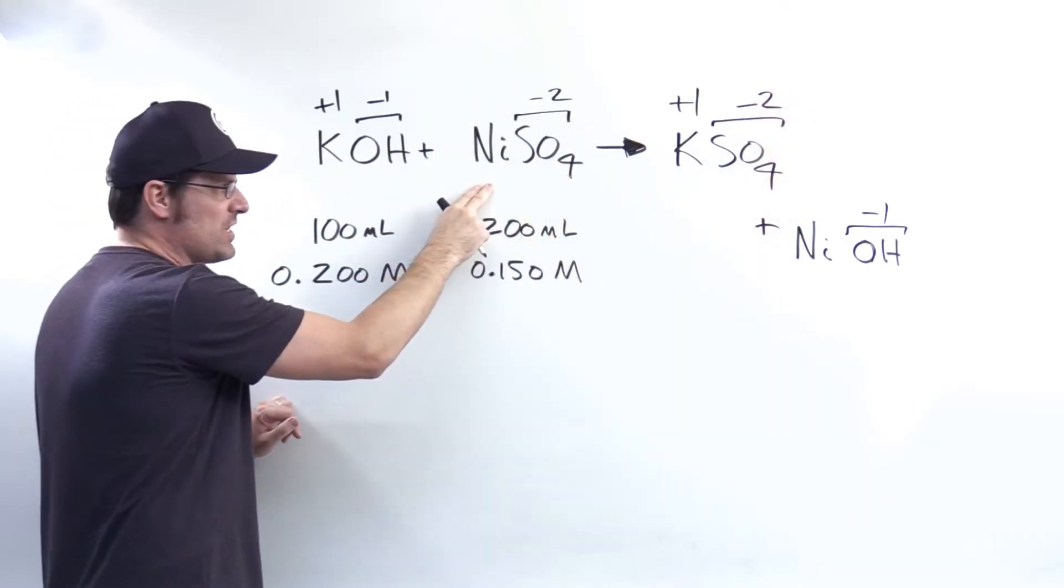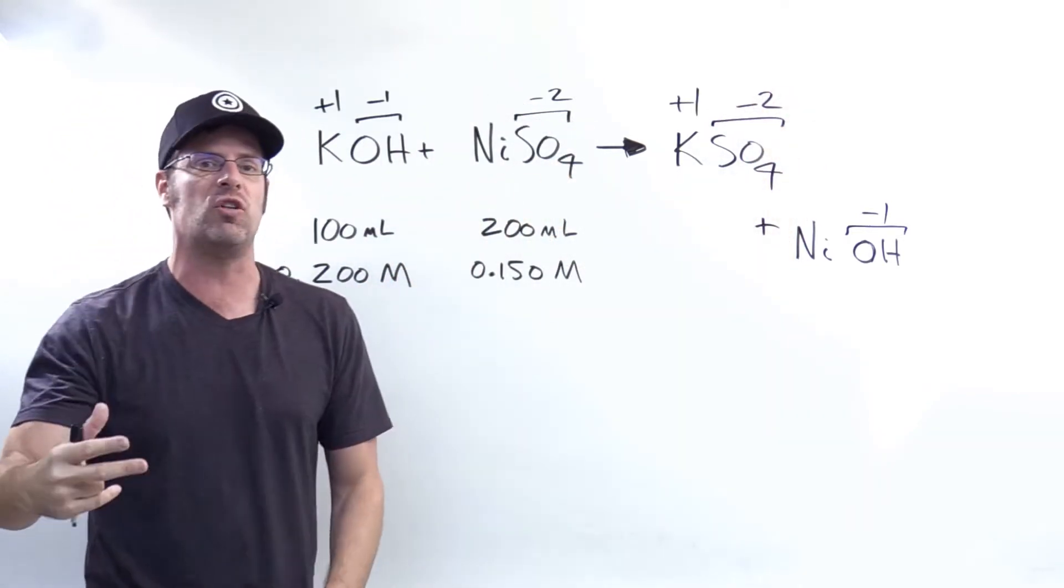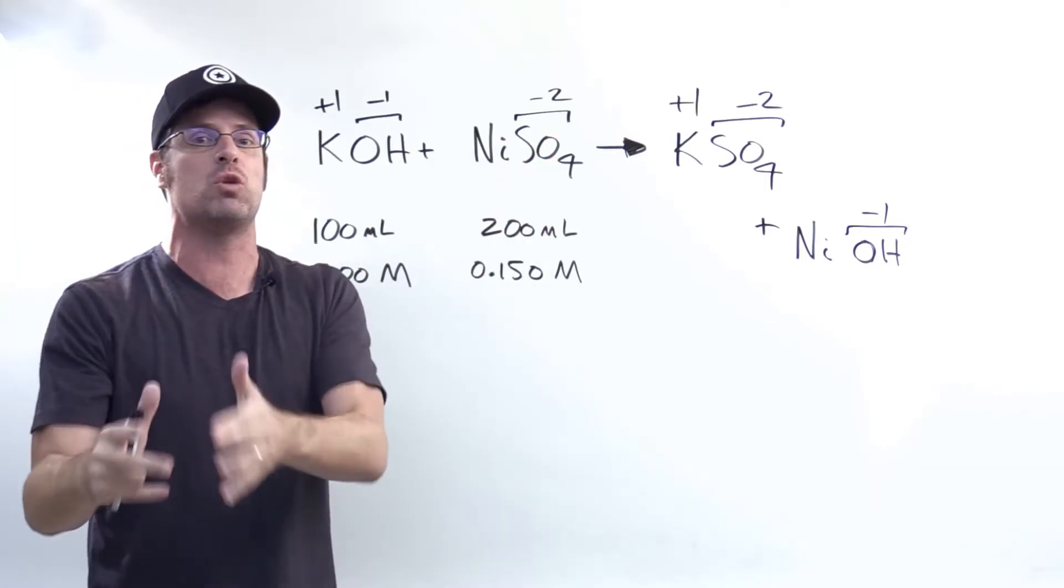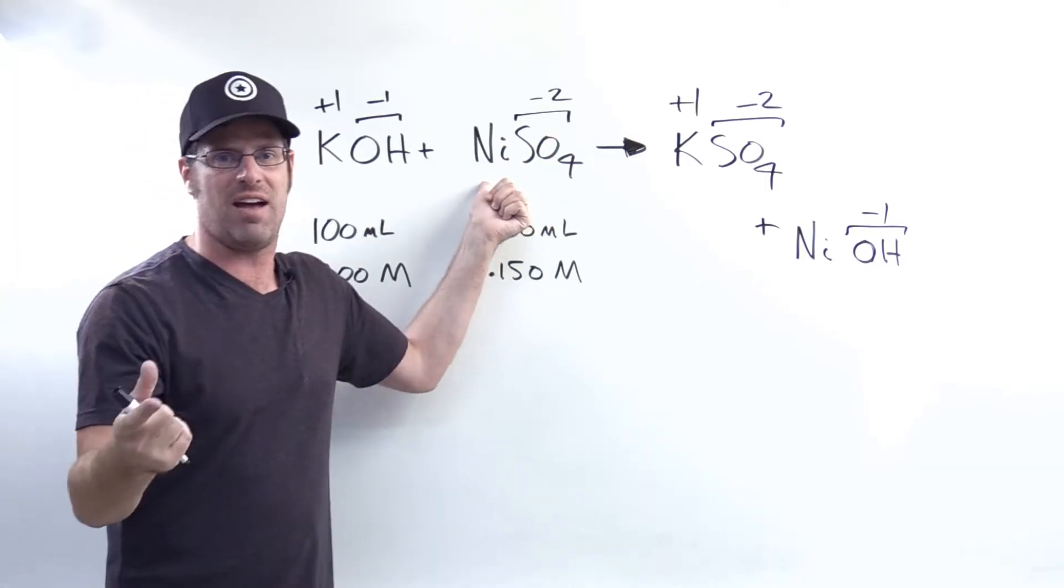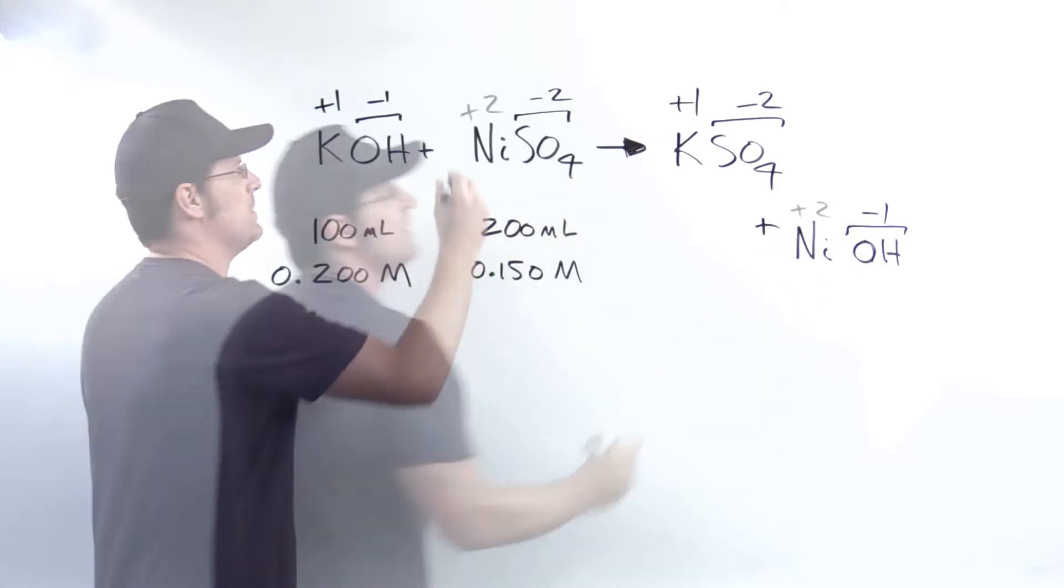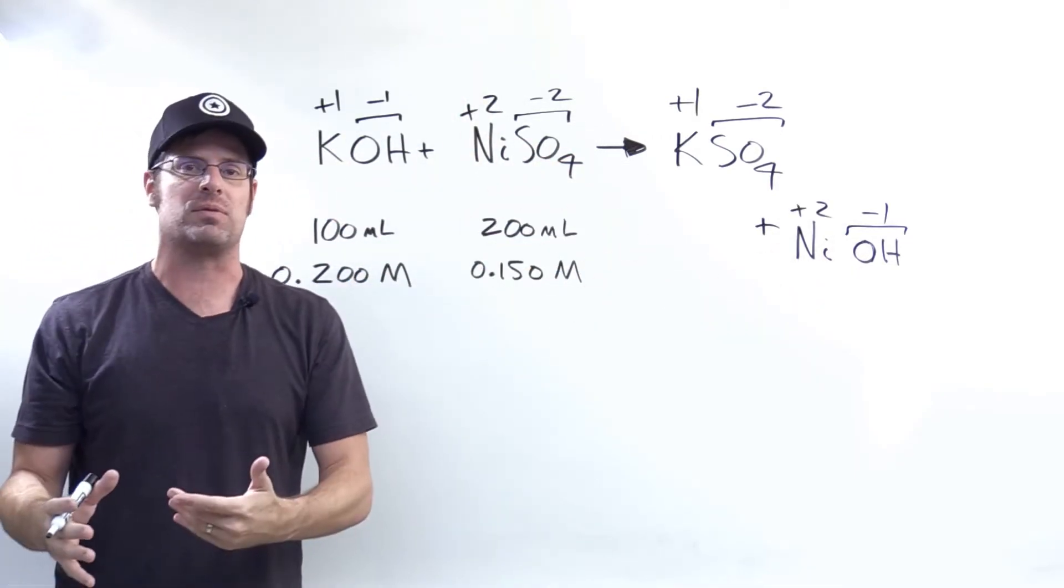Because the nickel here in this formula goes together one-to-one with the sulfate, in order to cancel out a negative two charge, what charge must the nickel have? Yeah, it's got to be a positive two. Now that I know all their charges on the right, do we see any problems? Obviously.